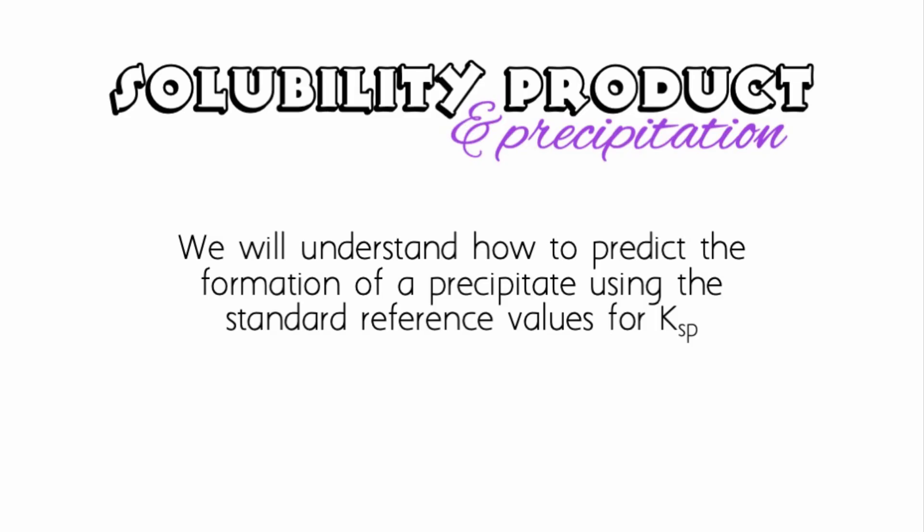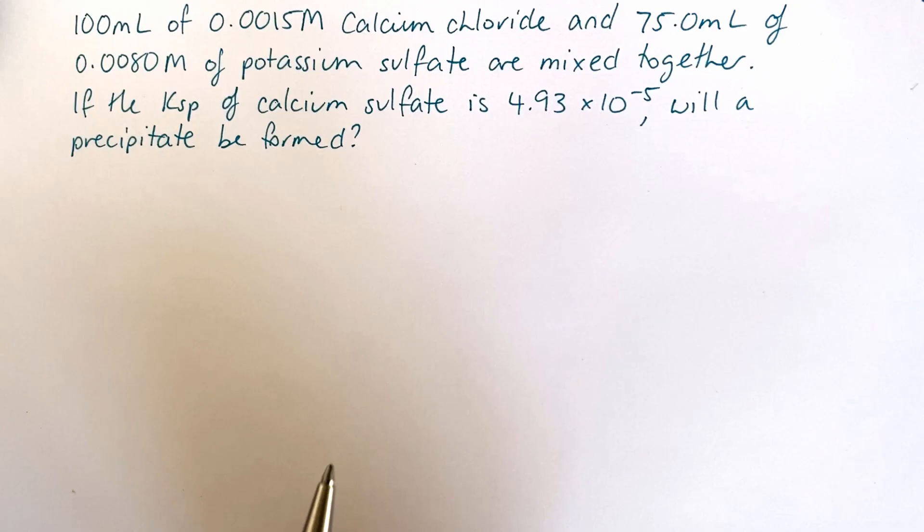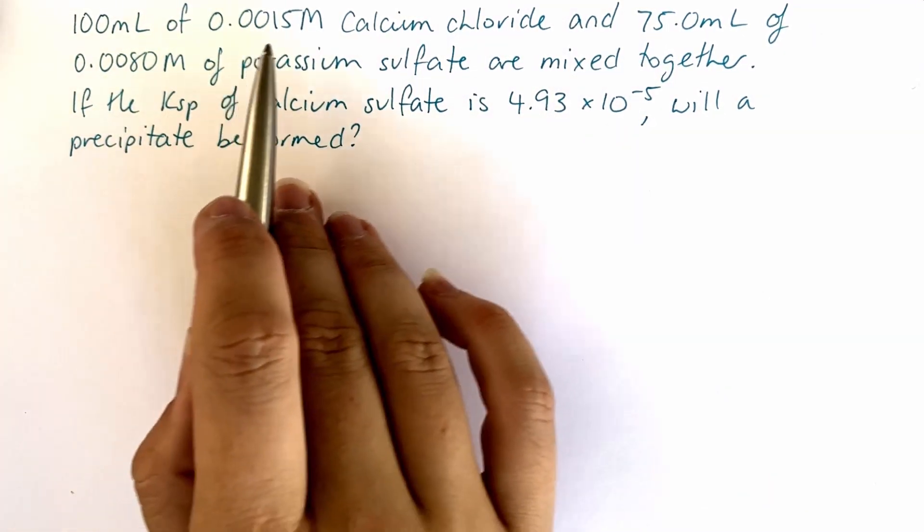In this video we are looking at how to determine whether a precipitate will form given the concentrations of two aqueous solutions that contain ionic compounds. Let's go through this example together. We have 100 mL of 0.0015 molar calcium chloride